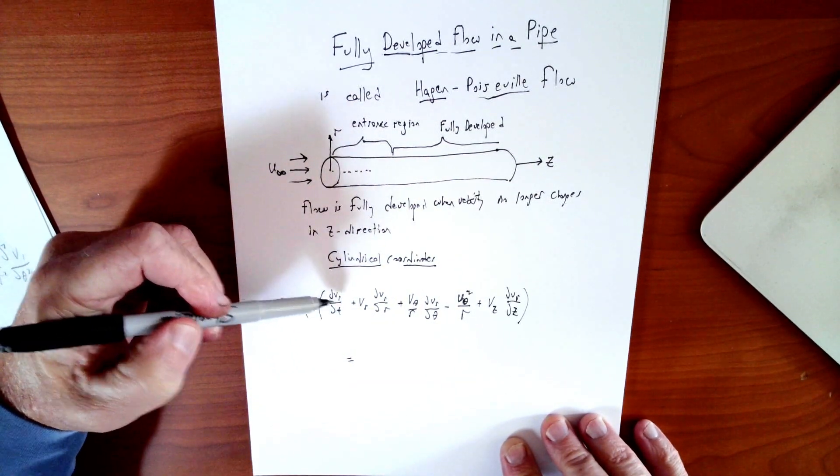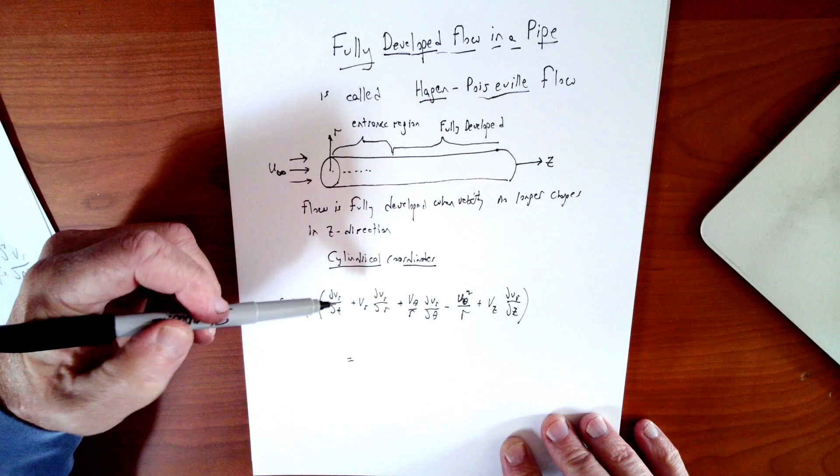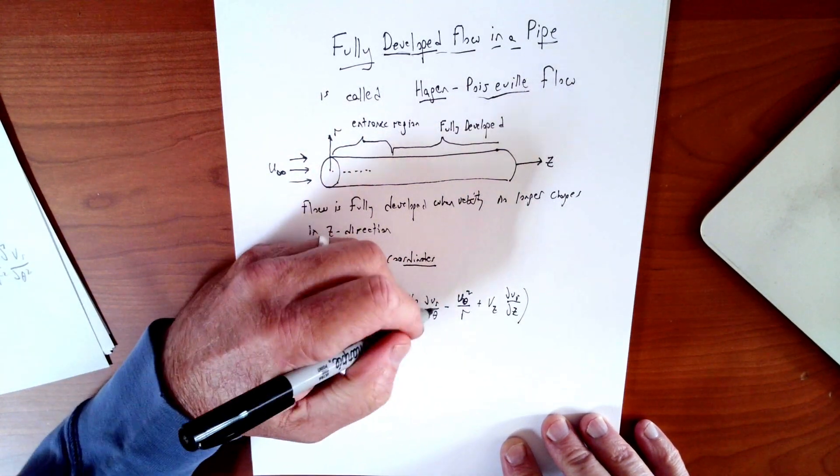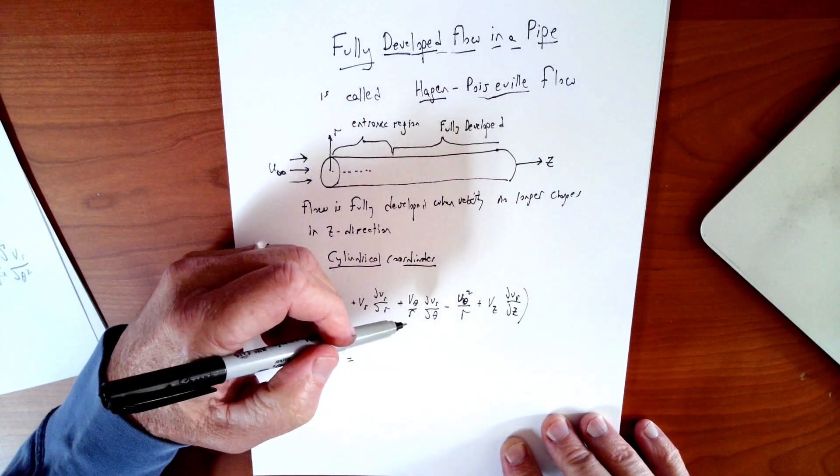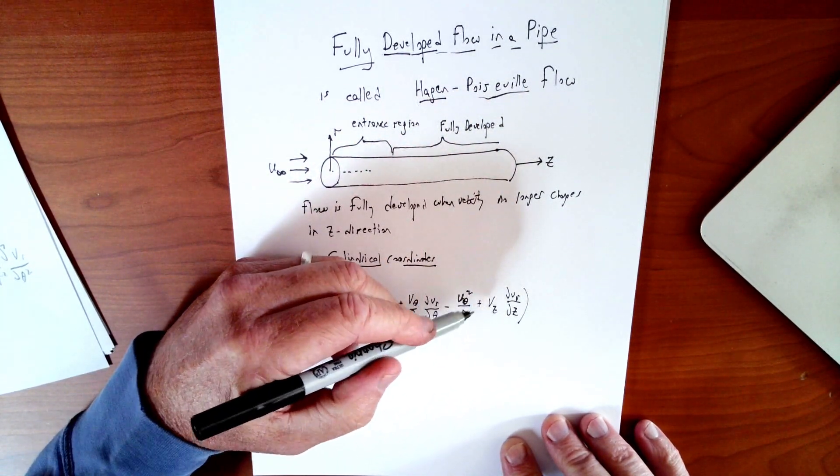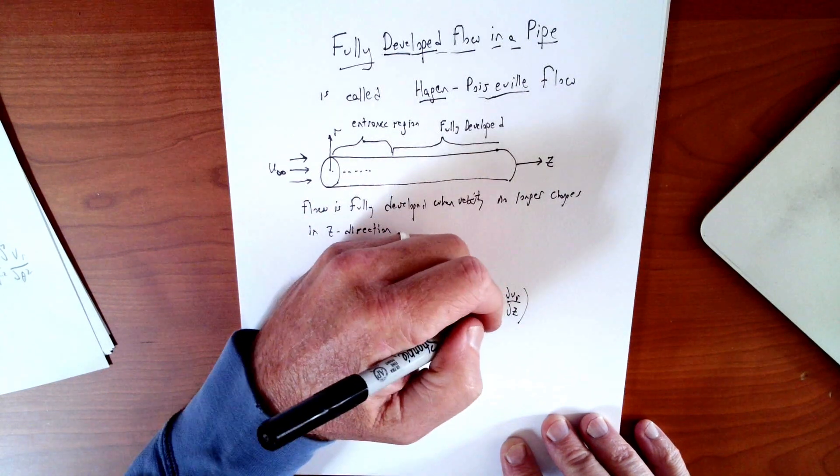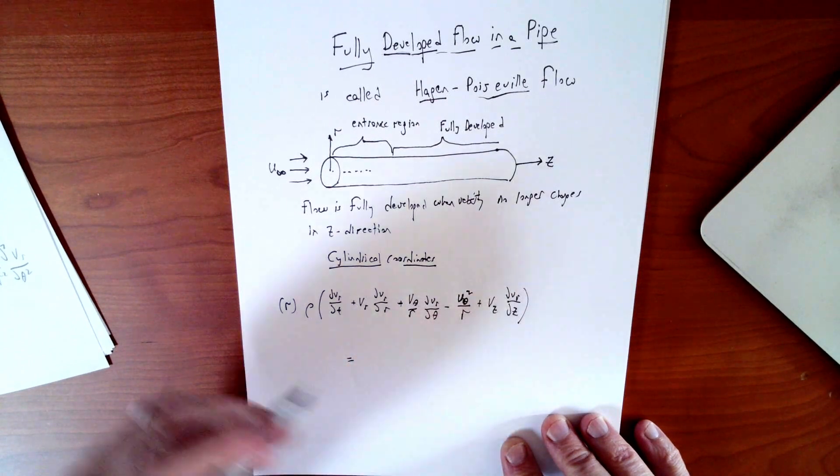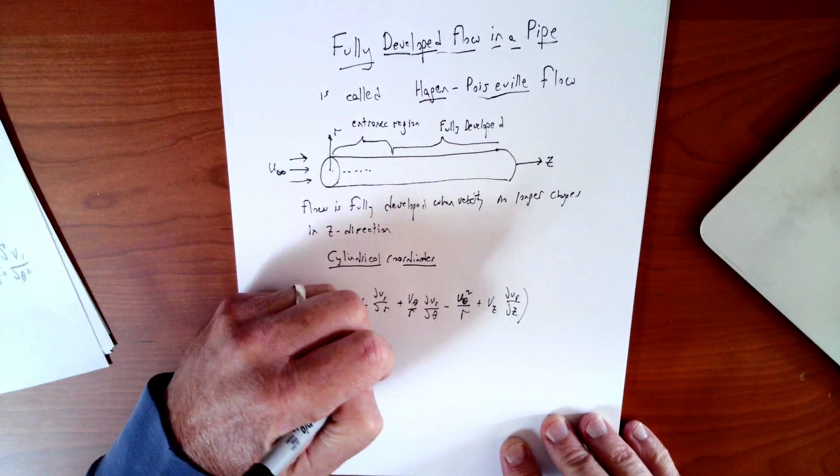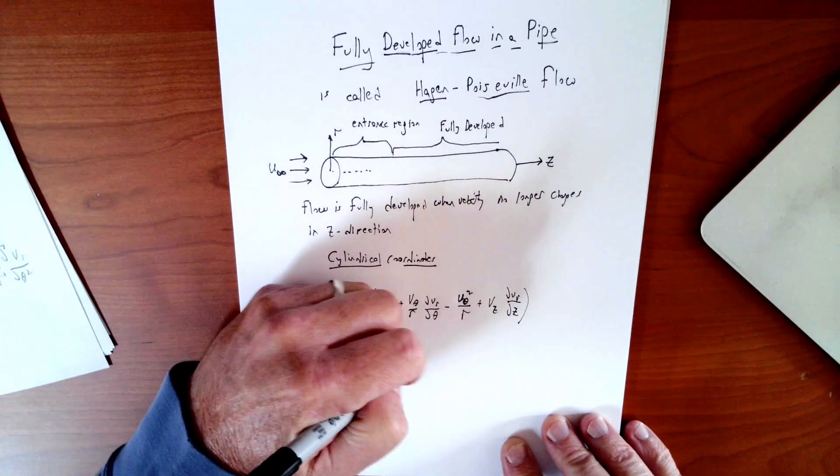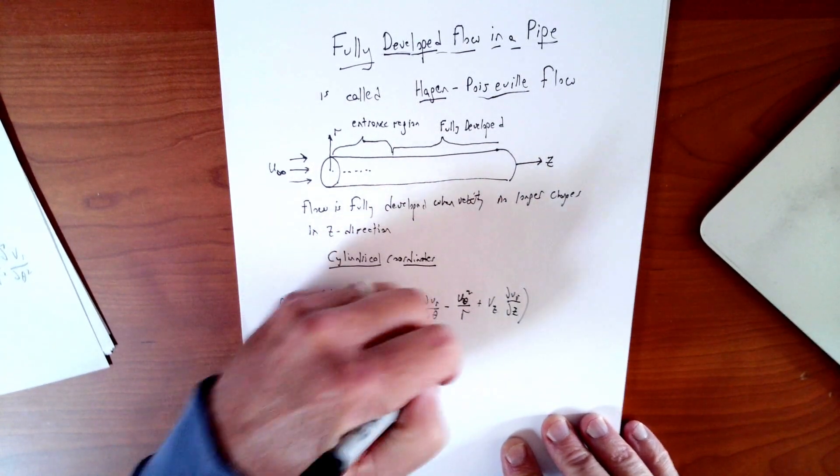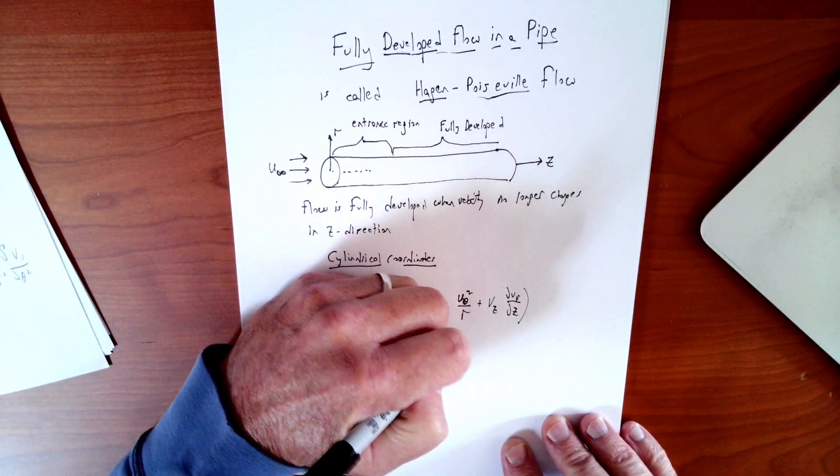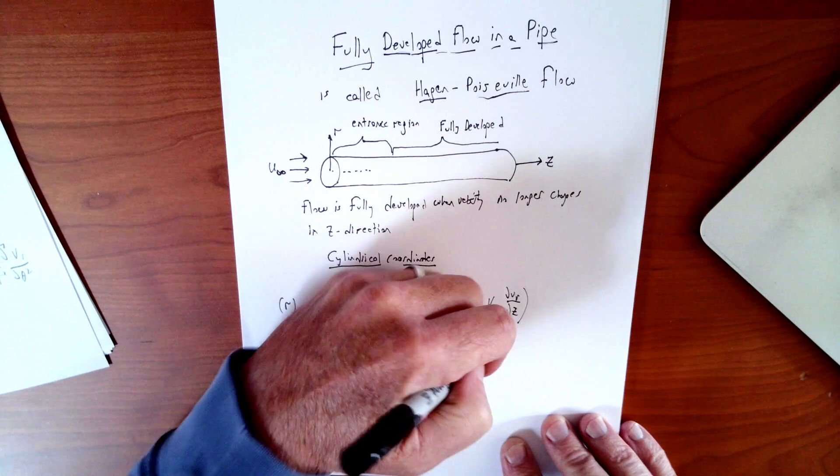The left-hand side, rho dvr/dt, so vr is going to be the radial velocity here. Vr times dvr/dr, v theta dvr/d theta with an r underneath, minus v theta squared over r, plus vz times dvr/dz. And that's all equal to minus dp/dr, pressure gradient in the radial direction, plus viscosity times the second derivatives terms, or the Laplacian in cylindrical coordinates.